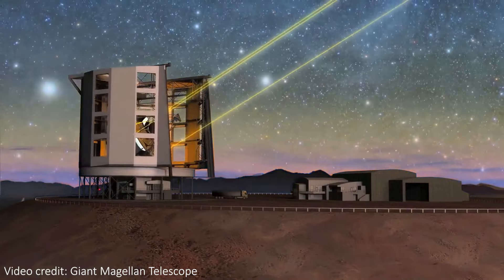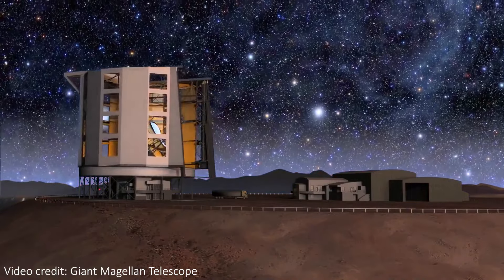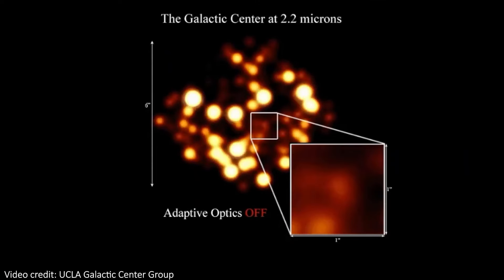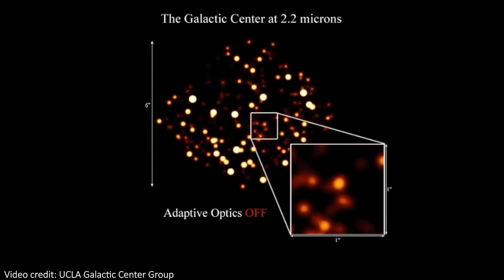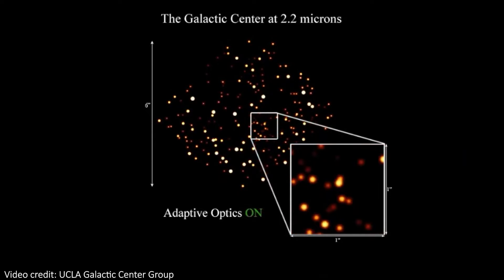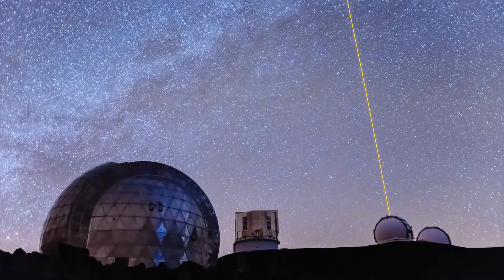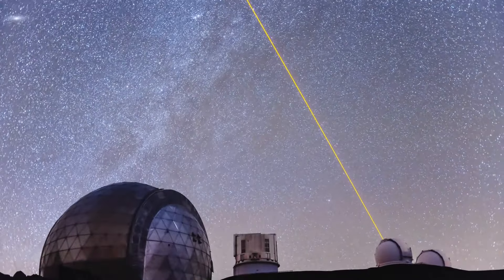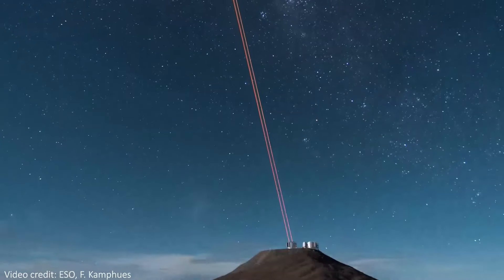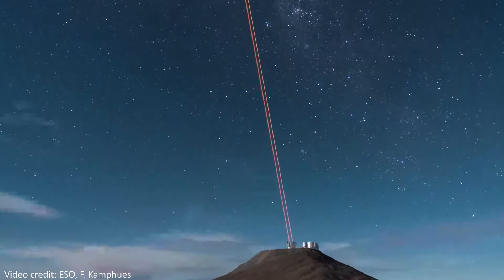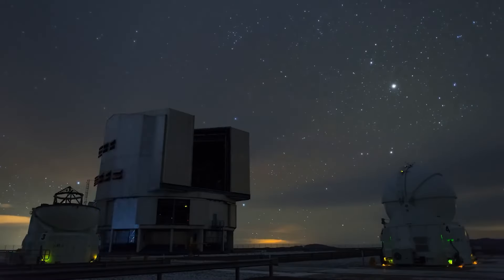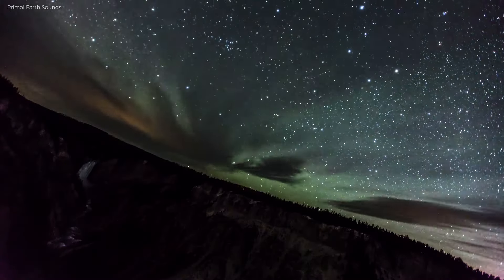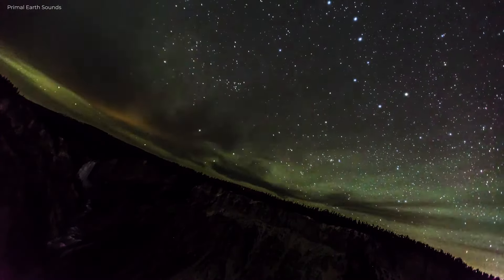Therefore, we can use the guide laser star to adjust our adaptive optics and eliminate most of the image distortions of real stars caused by the passage of light through the Earth's atmosphere. So, when we see telescopes shooting lasers into the sky, we are observing the process of creating guide laser stars to calibrate their adaptive optics for obtaining clearer images of stars with minimal impact from anomalous atmospheric refraction — or simply put, without twinkling.